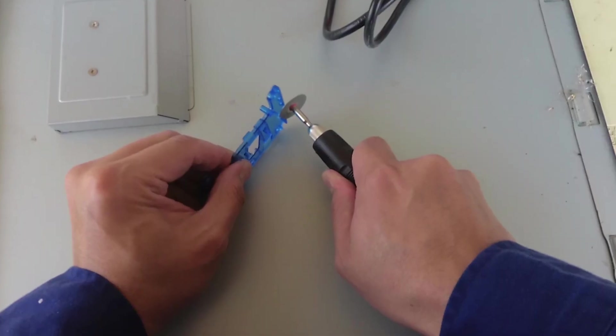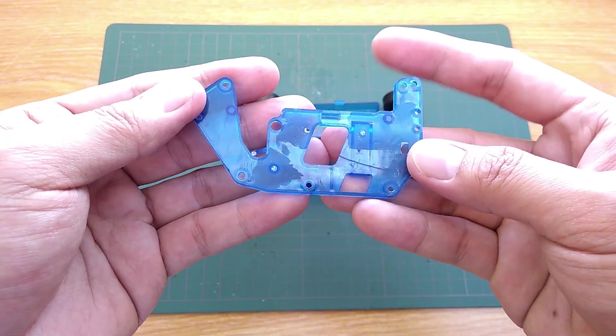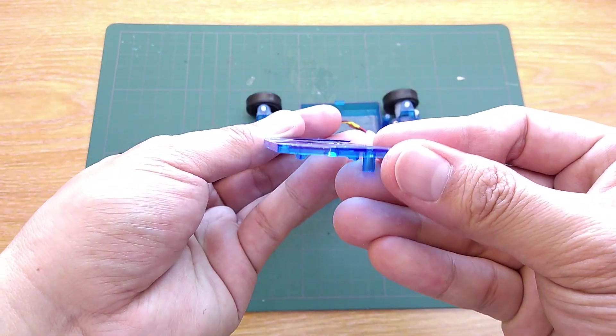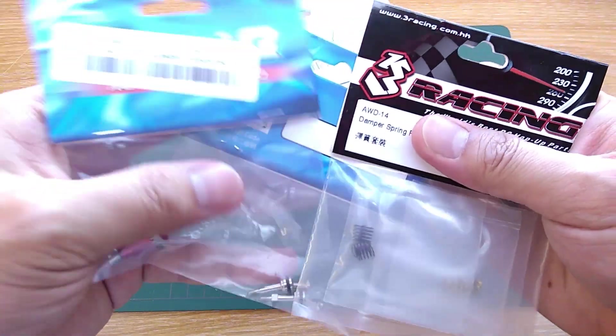Now I'll grind the post on the top plate out so I can stick ESC and receiver down easier later. With that done I'll leave the electronics for now and proceed with upgrading the car.